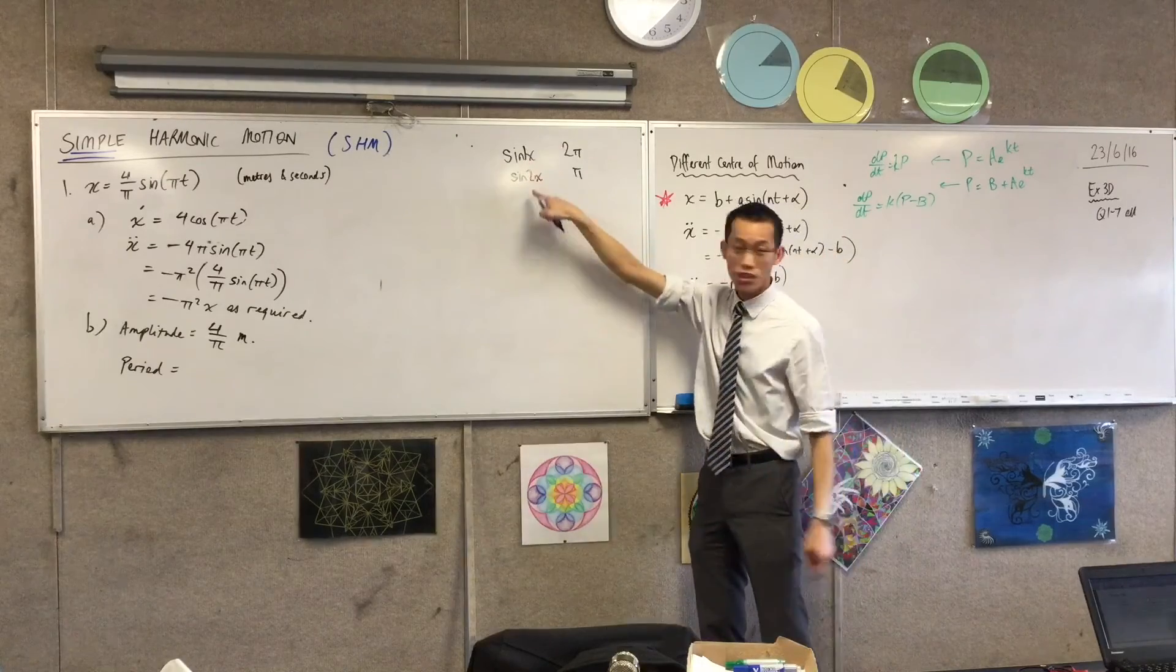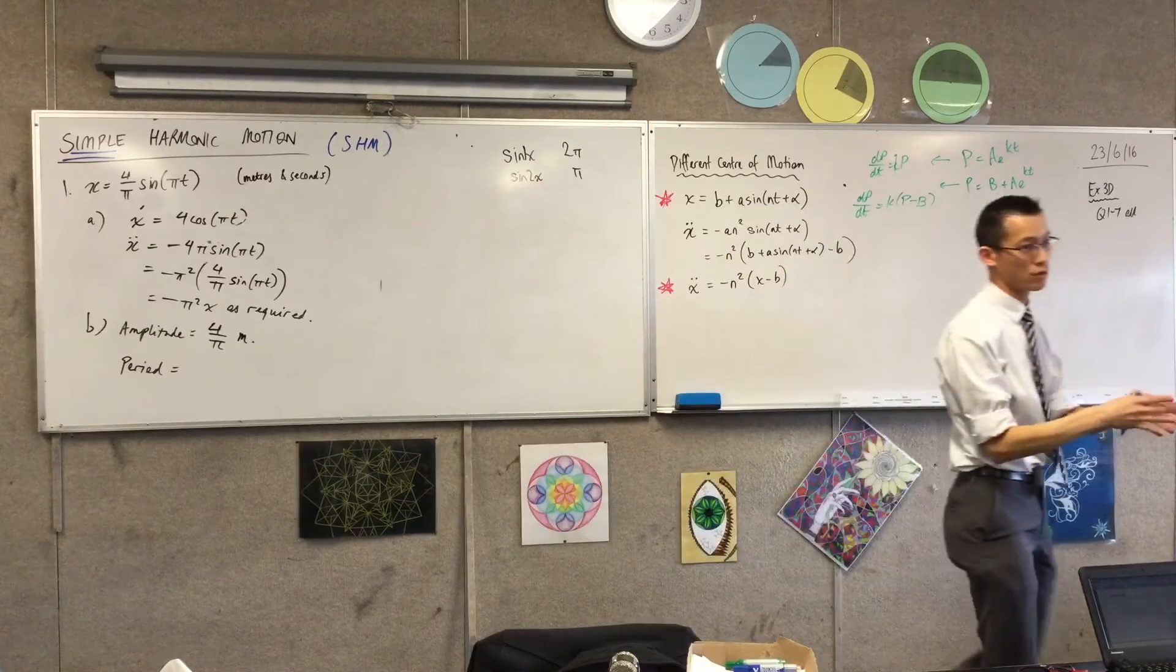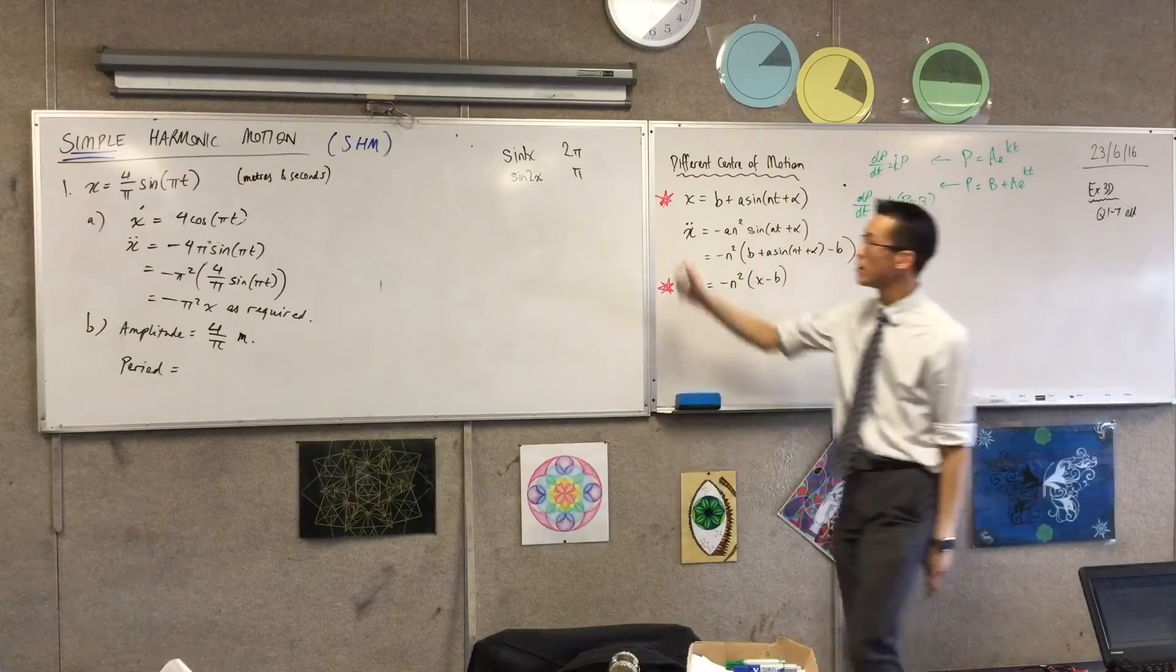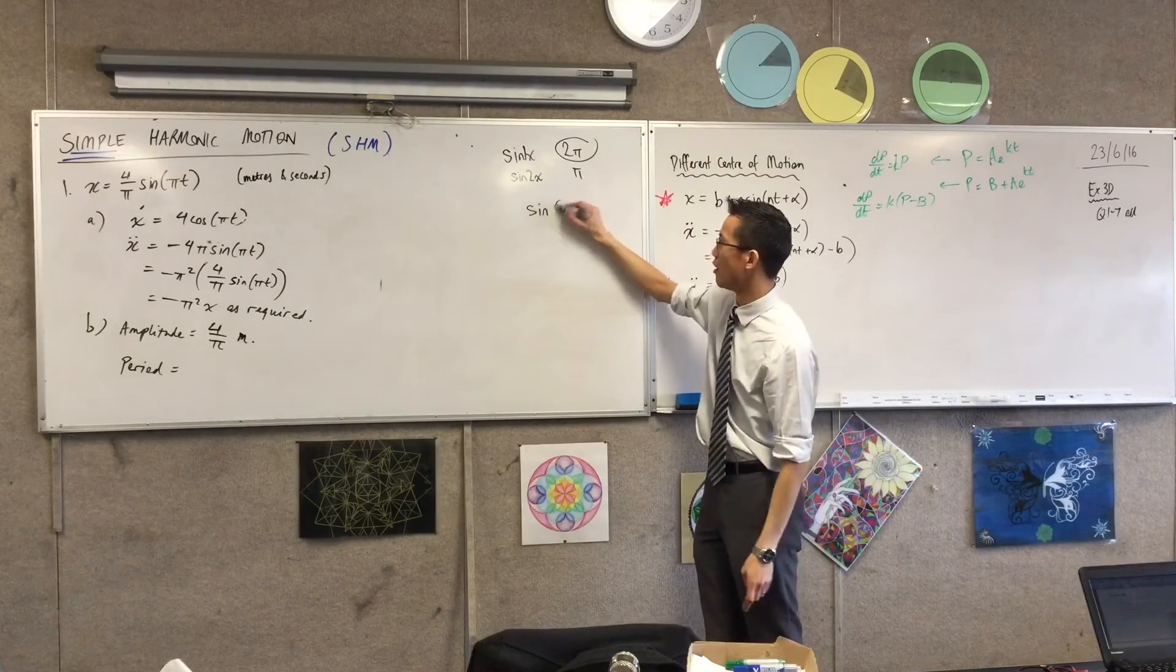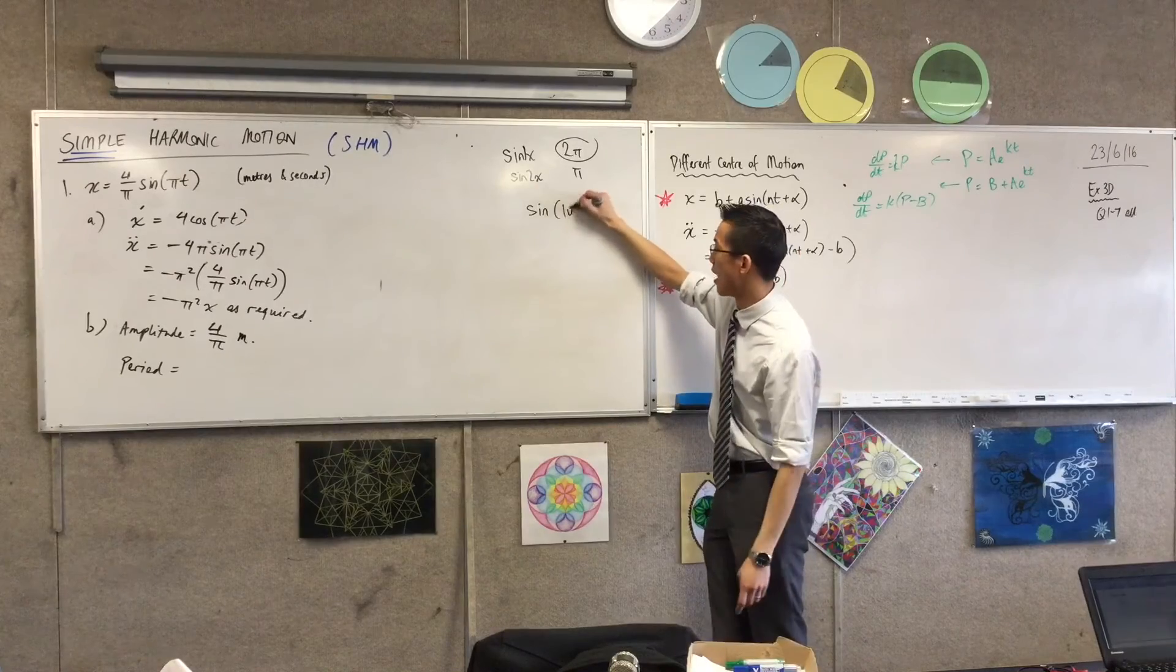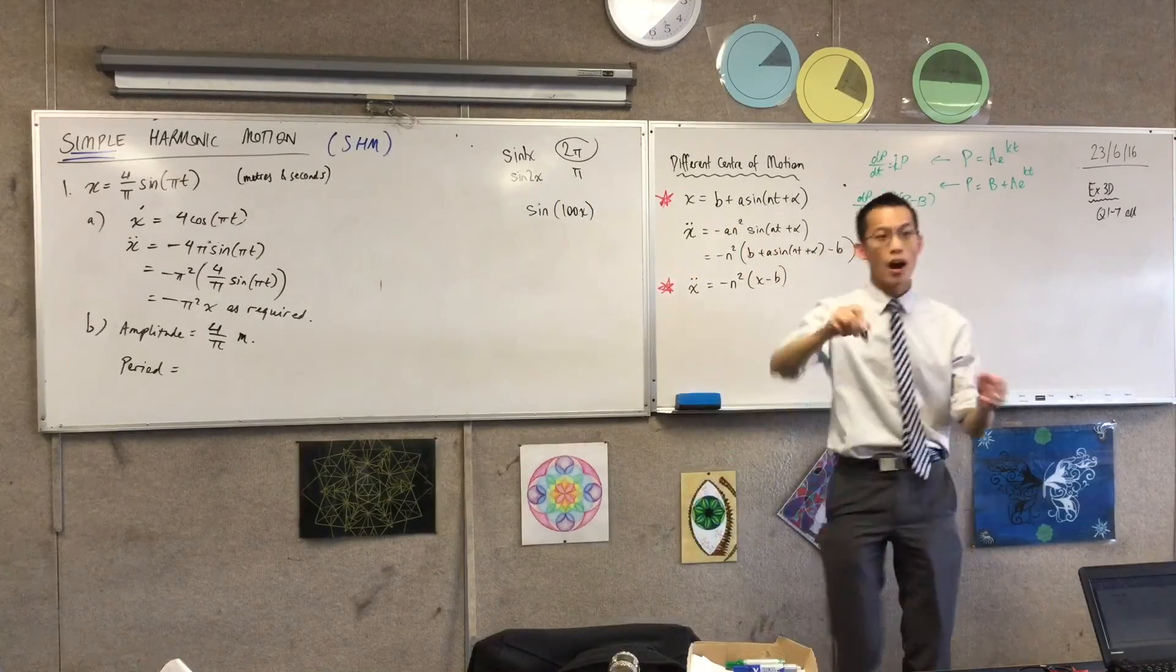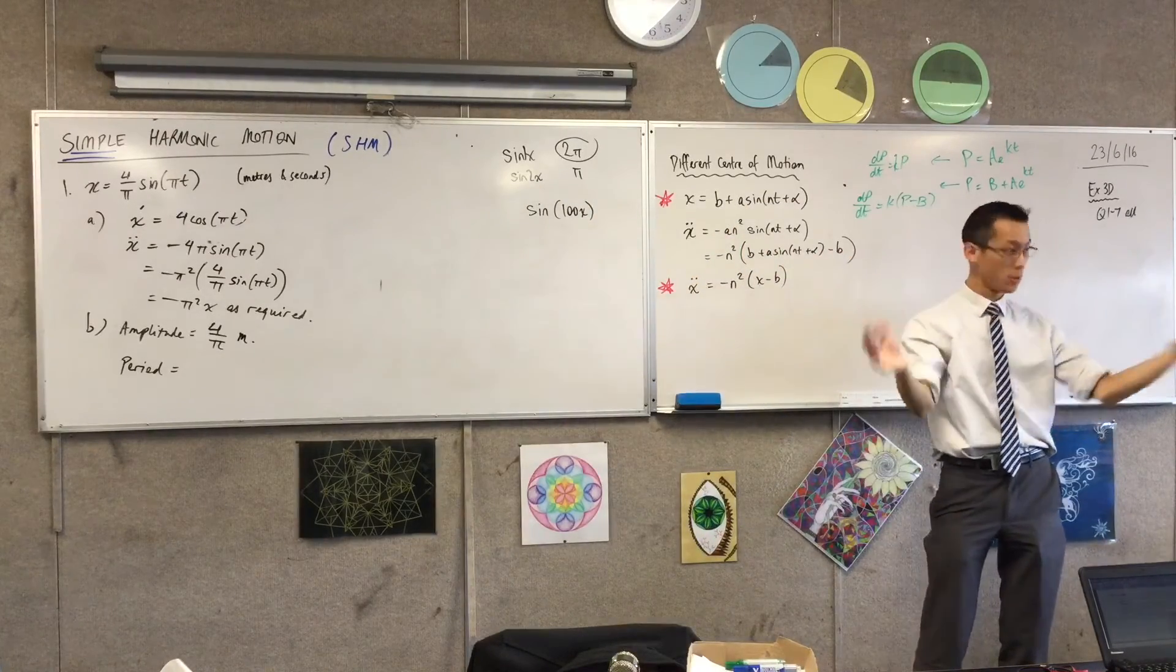Whatever that coefficient is, is how many cycles of your full thing that you get in two pi, right? So for example, if I saw sine of, you know, whatever, 100x, that means I've got 100 full cycles from naught to two pi, right? So how many full cycles do I have here?